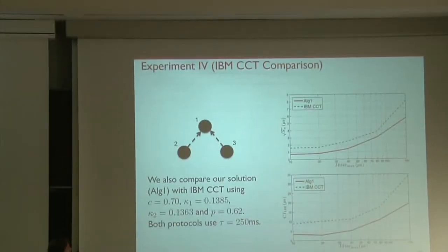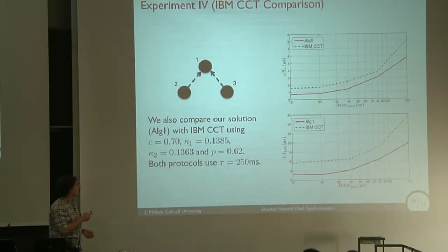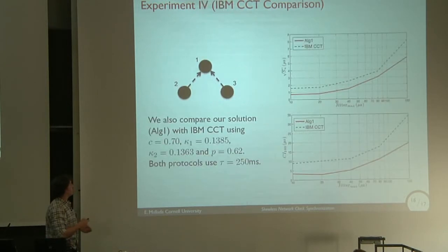We also compare our performance with IBM CCT solution. We use the same τ between the two protocols to make the comparison fair. The standard deviation of our metric performs much better for our algorithm. Even the maximum offset ever measured between the client and the leader is much better in our case, almost half of what you see in the other one, depending on how big is the jitter or the noise in the network.